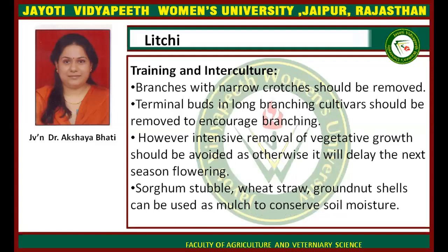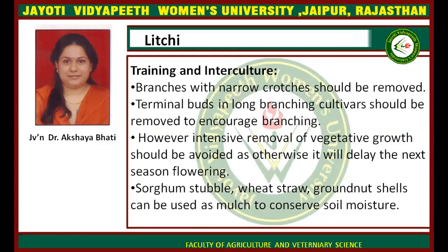For training and intercultural operations, branching with narrow crotches should be removed. If the crotch angle between the main trunk and lateral branches is less, those branches should be removed. Terminal buds in long-branching cultivars should be removed to encourage branching. Intensive removal of vegetative growth should be avoided, otherwise it will delay the next season's flowering. Sorghum stubble, wheat straw, and groundnut shells can be used as mulch to conserve soil moisture.